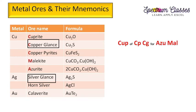For copper ores the mnemonic is 'cup of CPCG for azurite' — CU reminds us of copper. The ores are: cuprite (Cu2O), copper pyrites (CuFeS2), copper glance (Cu2S), azurite (2CuCO3·Cu(OH)2), and malachite (CuCO3·Cu(OH)2). The difference between azurite and malachite is only in the ratio of copper carbonate. Copper glance and silver glance are both sulfides. Silver chloride is known as horn silver; silver sulfide is known as argentite (silver glance).